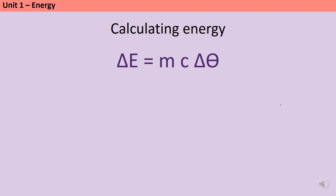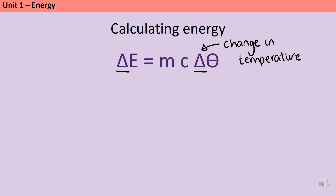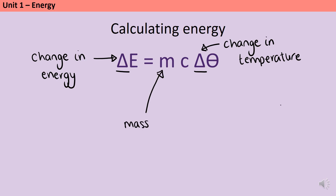Wherever you meet a letter delta in science, it means a change in something. So we've got a change in theta on the right-hand side — theta is the Greek letter that in physics stands for temperature. On the left, we've got the change in E, which stands for energy. There are two other terms in this equation: m stands for mass, and C is our specific heat capacity.